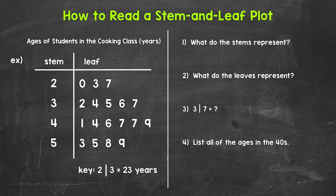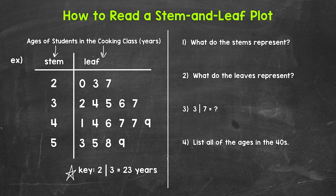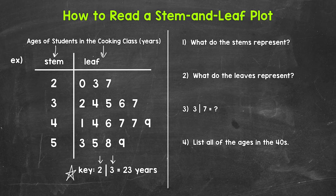Here are all of the stems, and here are all of the leaves. The stems are on the left and the leaves are on the right. What do those stems represent and what do those leaves represent? Let's look at this key right here — it will tell us. Stem and leaf plots can include two-digit numbers, three-digit numbers, decimals, whatever the case may be. So the key will tell us what we're looking at. This key says that a stem of two and a leaf of three equals twenty-three. We have a label of years since we are working with ages. That tells us the stems represent the tens place, the tens digit, and the leaves represent the ones place, the ones digit.